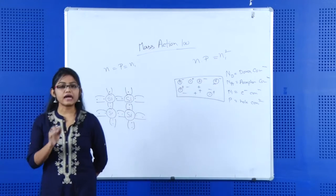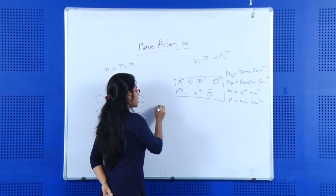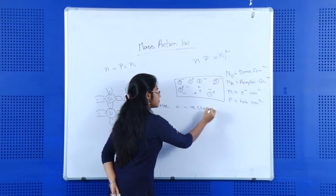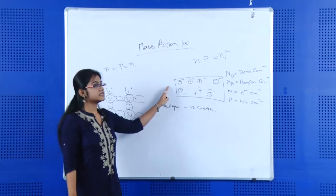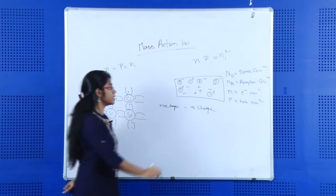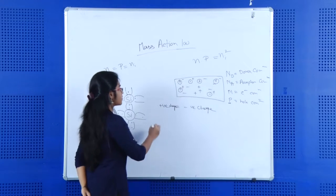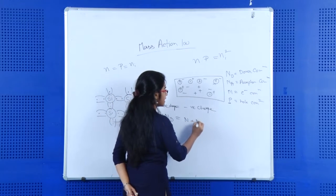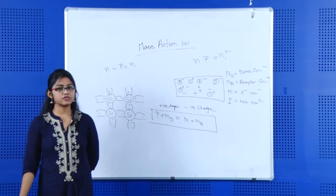For charge neutrality — charge neutrality means the total net charge is zero — the total number of positive charges equals the total number of negative charges. The positive charge is given by P and the donor concentration, so we can write: P plus ND equals N plus NA. This is the equation for charge neutrality.